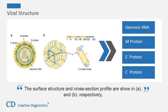Zika virus is enveloped and spherical, 50 nm in diameter with an electron dense core of 30 nm. It contains a genome of 10.8 kilobits positive sense, single-stranded RNA, and a proteome of a single polyprotein co- and post-translationally cleaved into 11 mature proteins, mainly including E, M, and C proteins. The E and M proteins are organized in icosahedral symmetry consisting of 60 repeating units, and each asymmetric unit contains three individual E protein molecules A, B, and C. The E proteins are arranged as dimers, with three dimers lying parallel to each other forming a raft. There are 30 such rafts covering the viral surface. The E and M proteins contain three domains: one, two, and three.